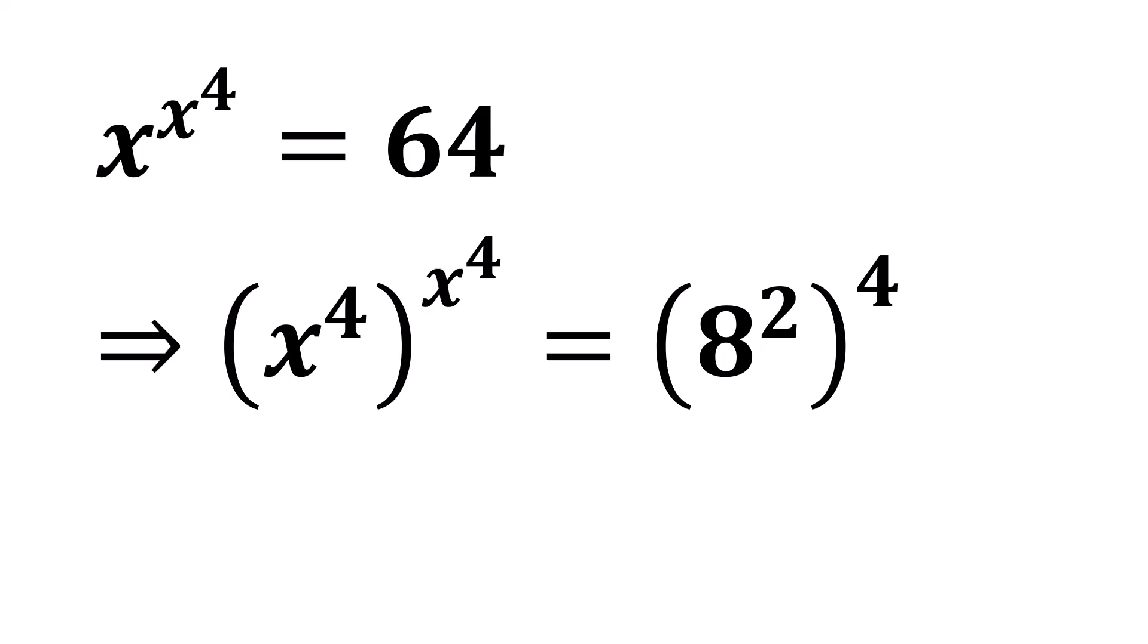Now, 8 squared all raised to the power 4 can be written as 8 to the power 4. So we will get this equation as 2 times 4 is 8.